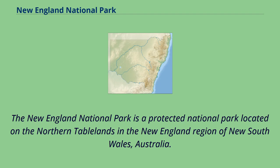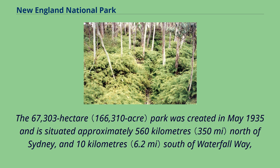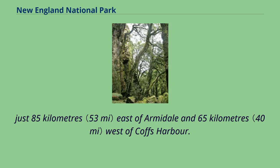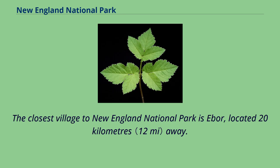The New England National Park is a protected national park located on the Northern Tablelands in the New England region of New South Wales, Australia. The 67,303-hectare park was created in May 1935 and is situated approximately 560km north of Sydney and 10km south of Waterfall Way, just 85km east of Armidale and 65km west of Coffs Harbour. The closest village to the park is Ebor, located 20km away.